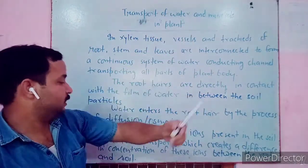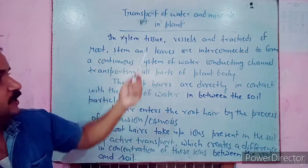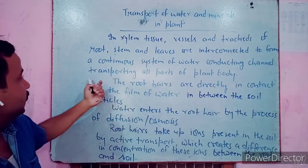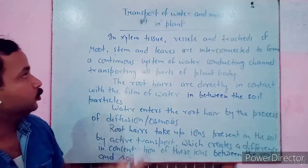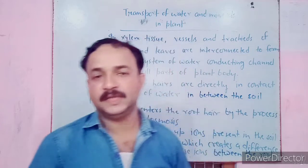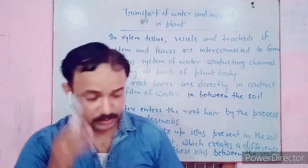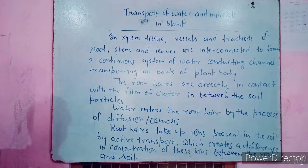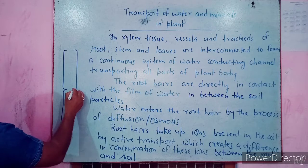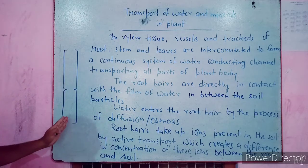Let's see the transport of water and minerals in plants. Water and minerals are transported in xylem tissue. Vessels and tracheids of root, stem, and leaves are interconnected to form a continuous system of water-conducting channels transporting water to all parts of the plant body. Xylem has four main components: xylem vessel, tracheids, xylem fiber, and xylem parenchyma. The vessels and tracheids are the main water-transport elements.